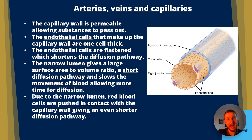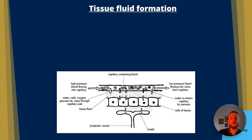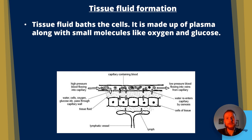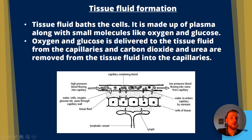Tissue fluid bathes the cells — if you get a small cut with fluid weeping out that isn't red, that's tissue fluid. It consists of plasma along with small molecules like oxygen and glucose, but no red blood cells. Oxygen and glucose are delivered to the tissue fluid from the capillaries, while carbon dioxide and urea are removed from the tissue fluid into the capillaries.